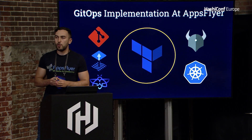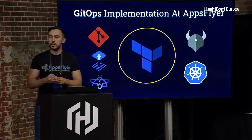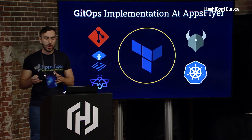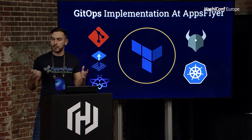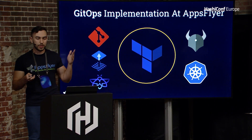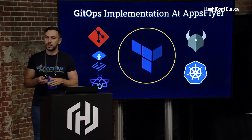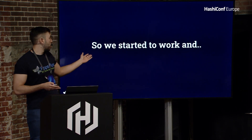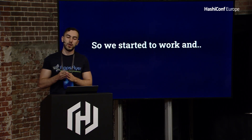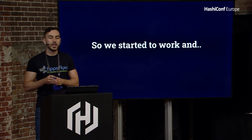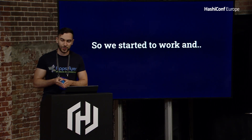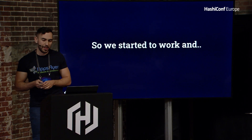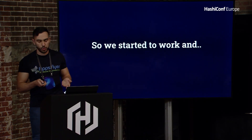We chose Terraform as our provisioning tool and the API communication tool between us and the developers, so that we can publish new infrastructure products while providing guidelines and best practices. We chose Terraform as our primary language because it's intuitive, declarative, and community-driven. We started to work and didn't want to copy-paste between modules or declare the same variable multiple times. We tried to use a lot of nesting between modules, which we knew was a bad practice in Terraform, leading to unsolvable dependencies. As a result, we went back to the documentation to understand what we were doing wrong.